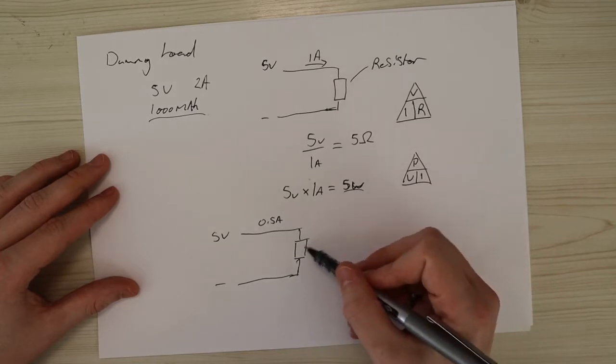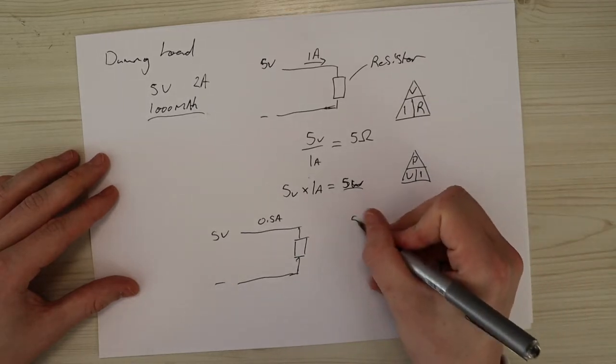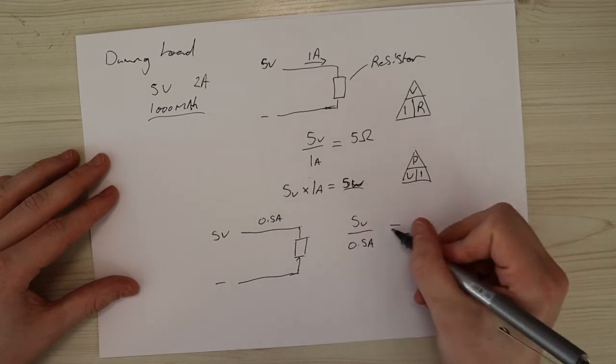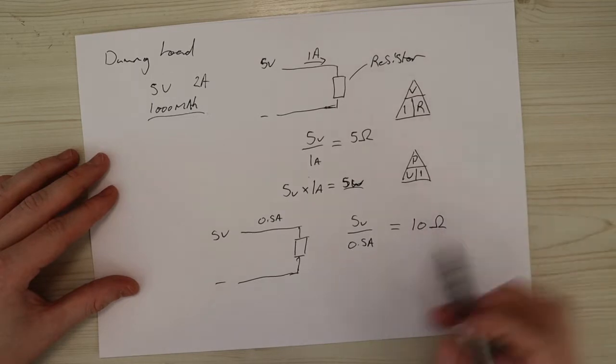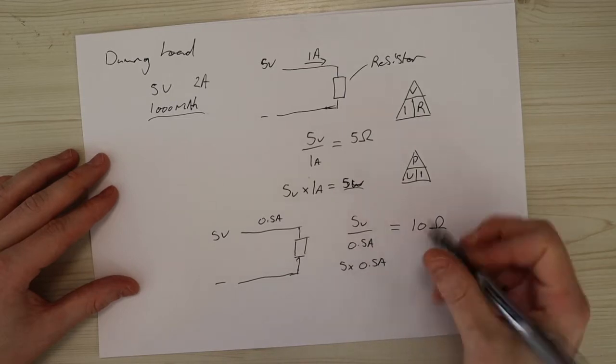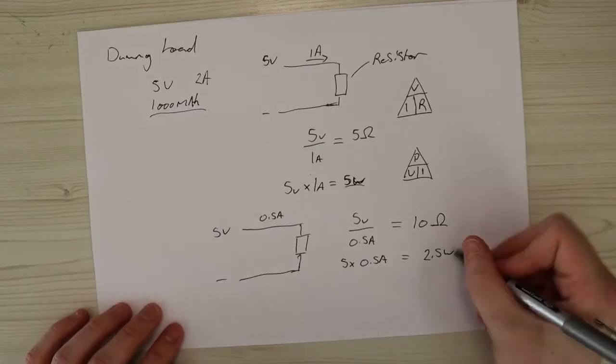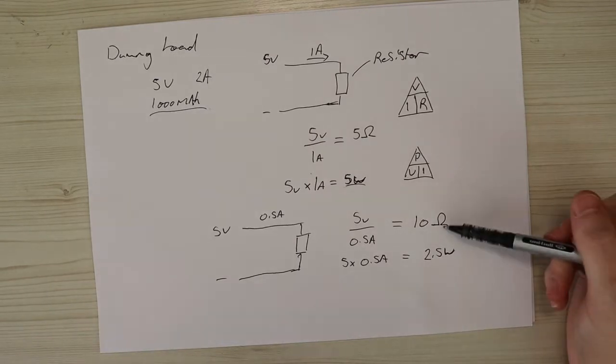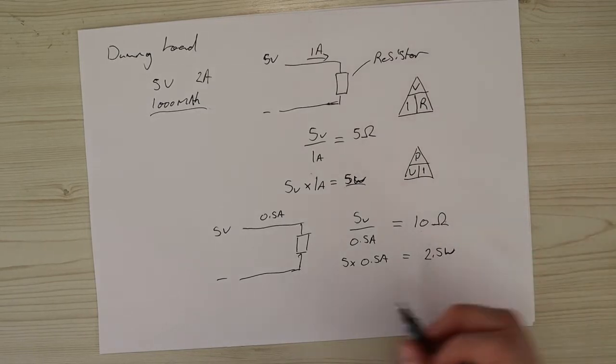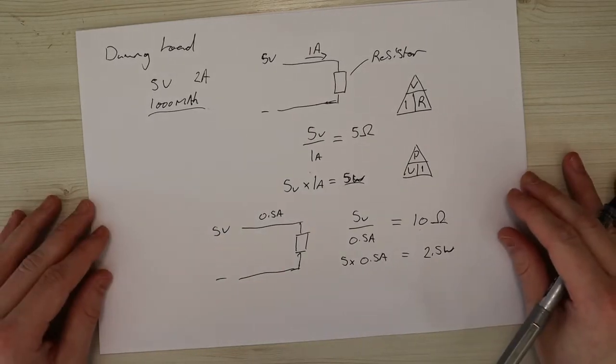So from this we need to find out the resistor. Again, use the same law here. So we do 5 volts over 0.5 amps and we get 10 ohms. For the wattage of this, we're going to do 5 times 0.5 amps which equals 2.5 watts. So it's a lot less wattage and a higher resistor. So these will be quite easy to find actually. You can get 10 ohm by 10 watt resistors quite cheaply online. So I'd recommend doing that for this circuit.